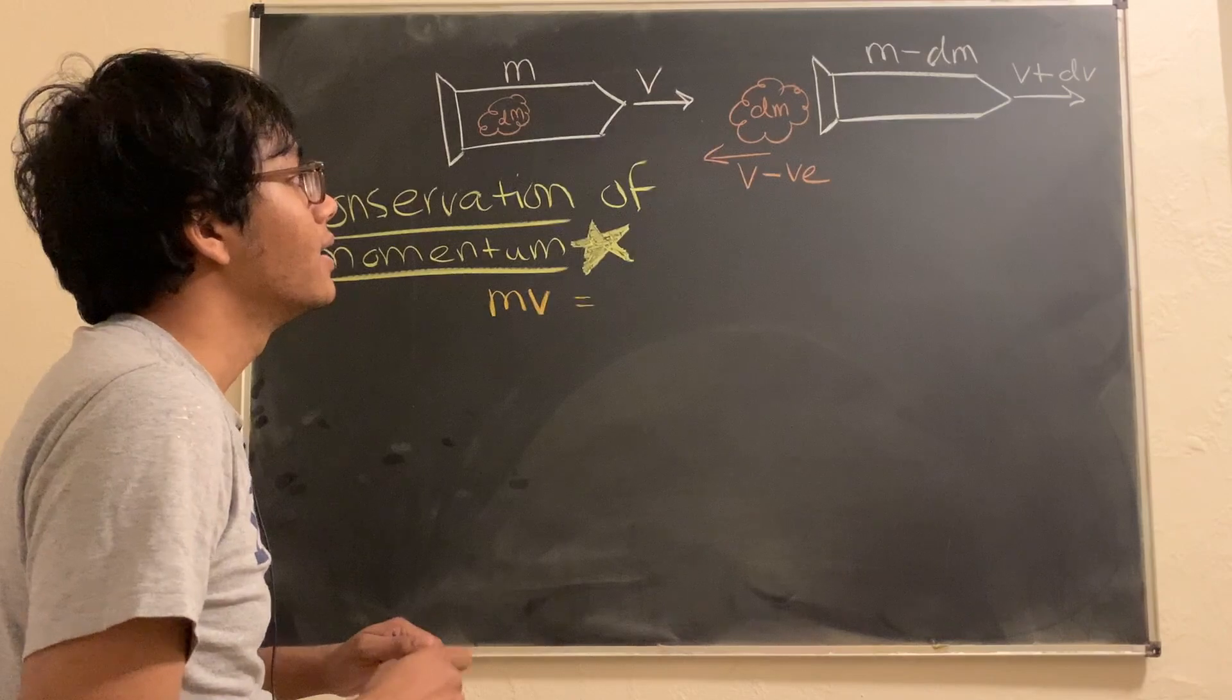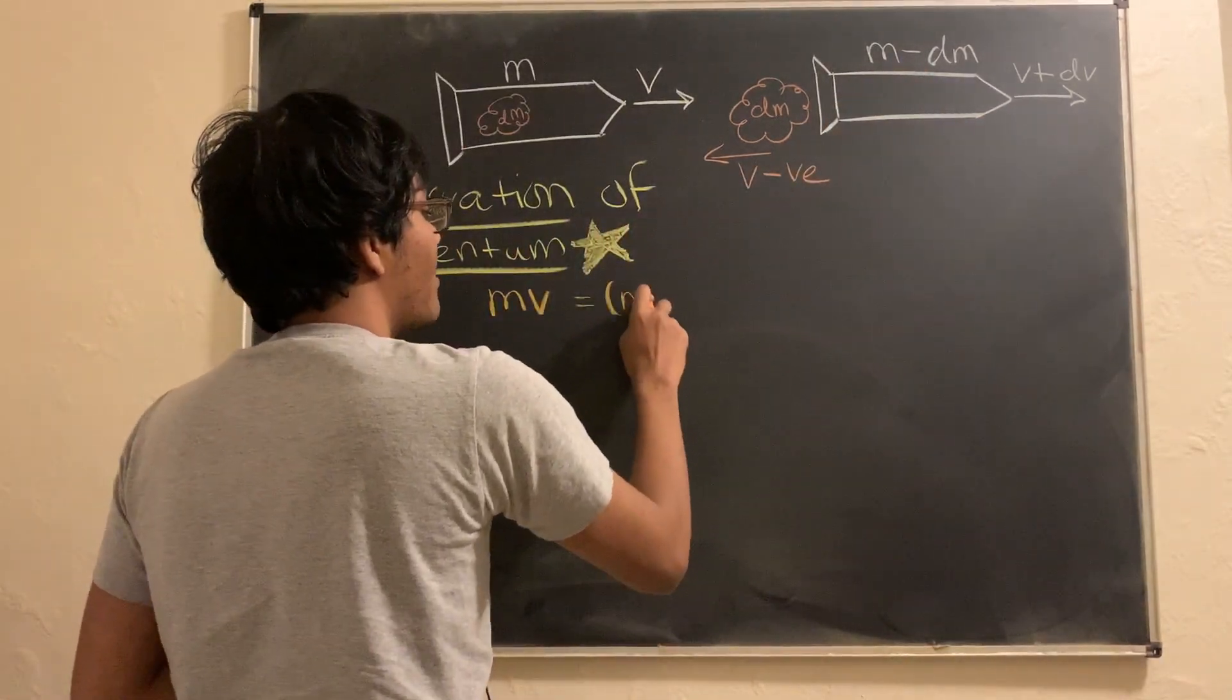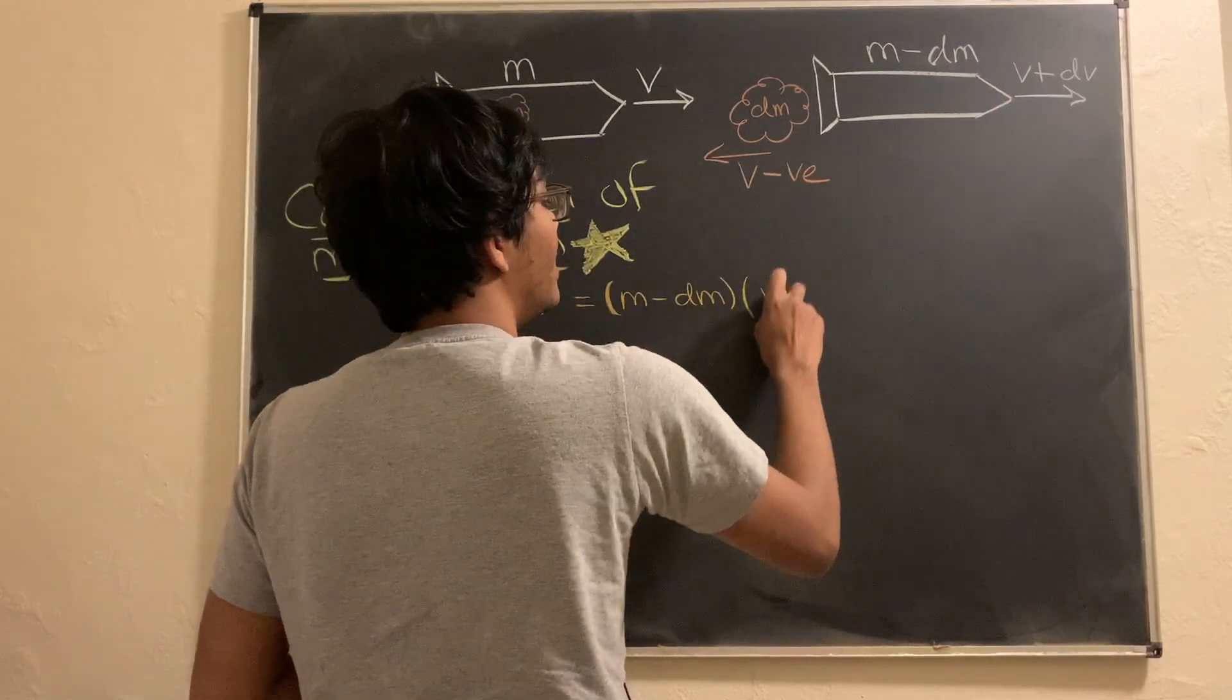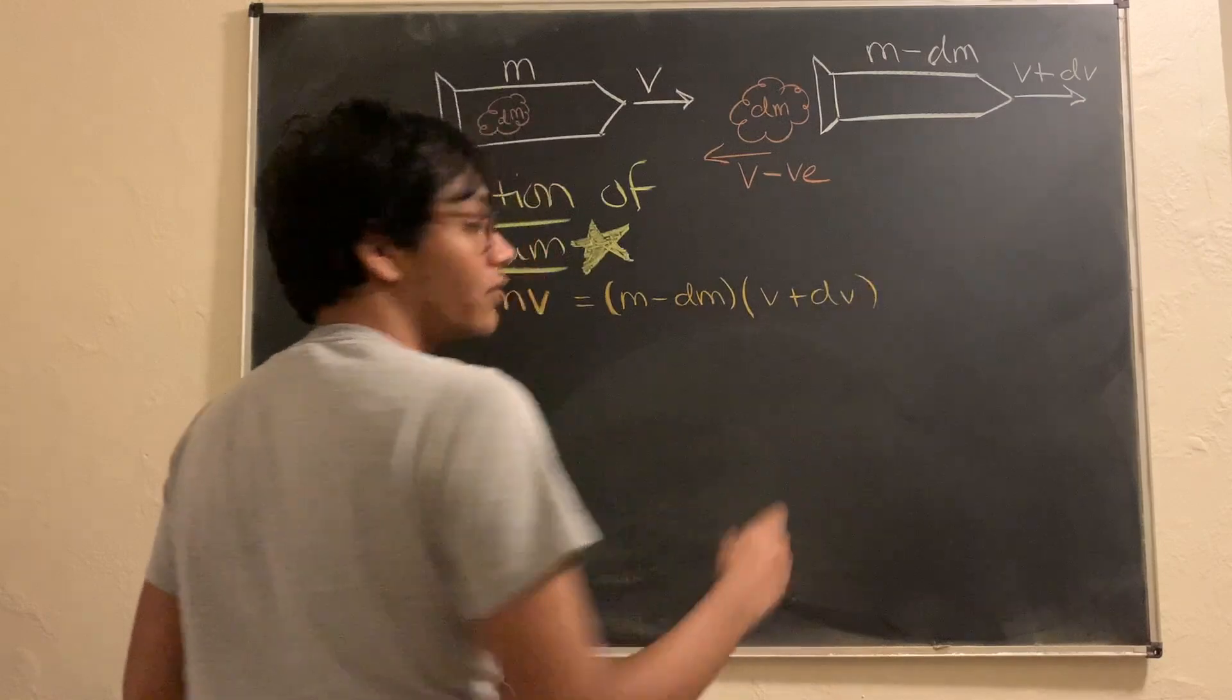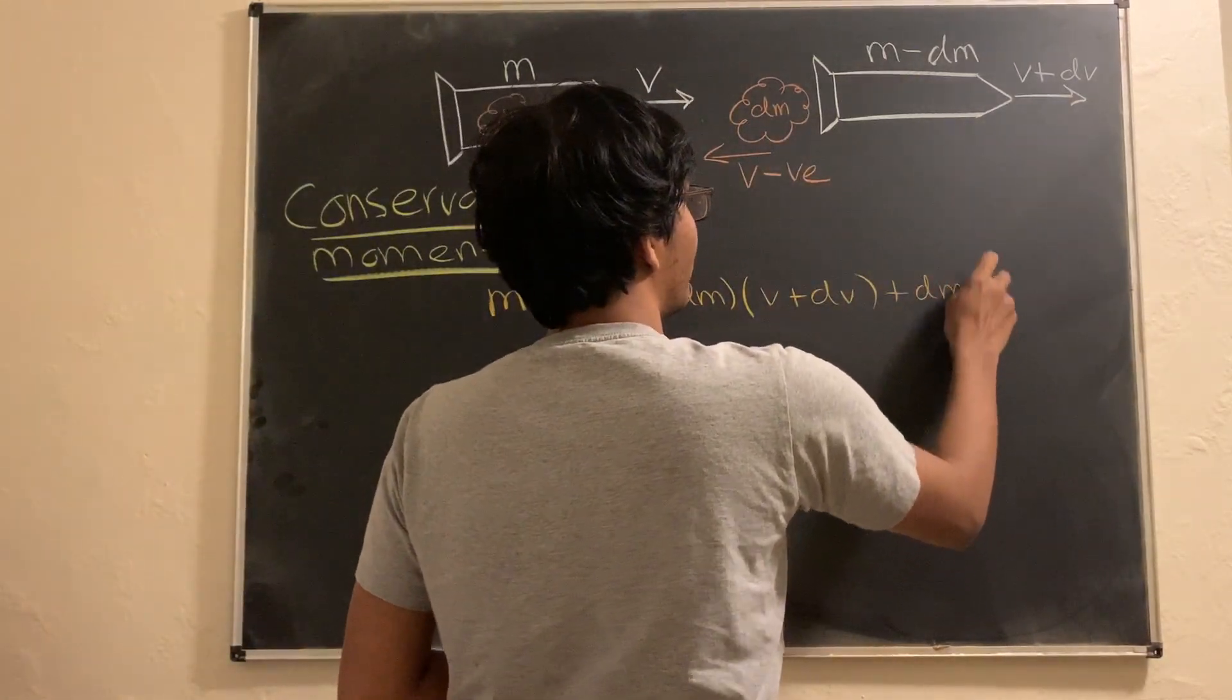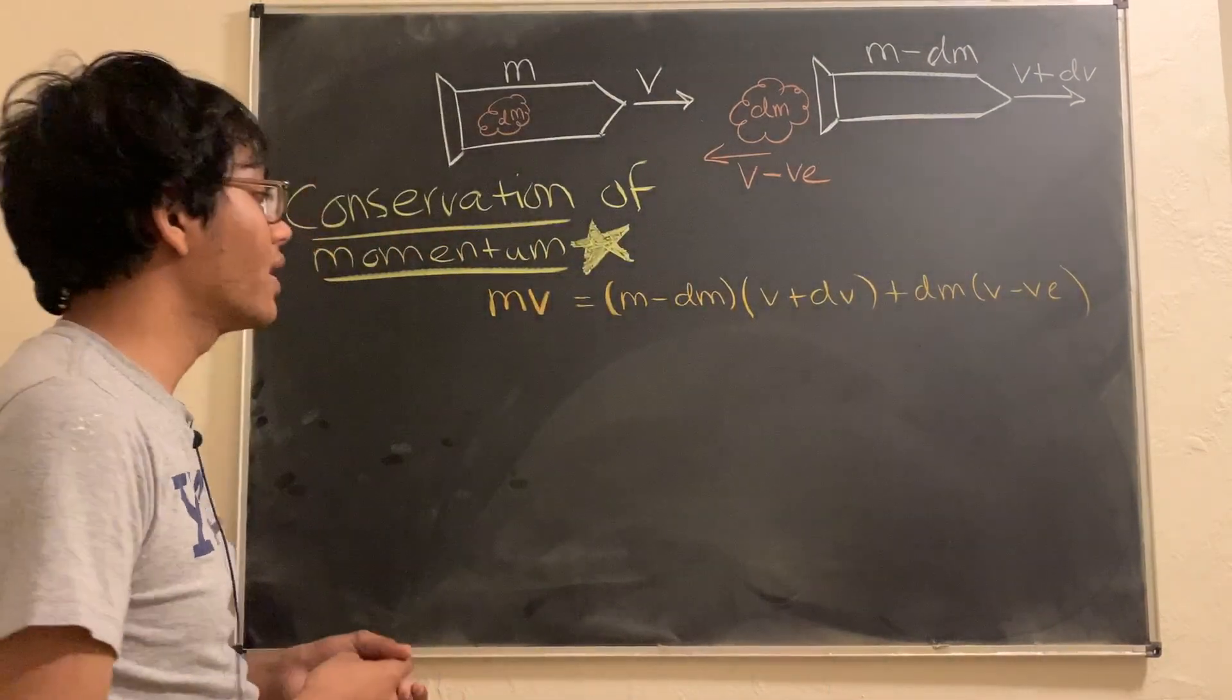That's equal to what? Well, that's equal to the mass of the rocket. The new mass is M minus dm times the new velocity V plus dV. Don't forget about the gas that has a mass of dm and a velocity of V minus V exhaust. Now, we're going to go ahead and simplify this.